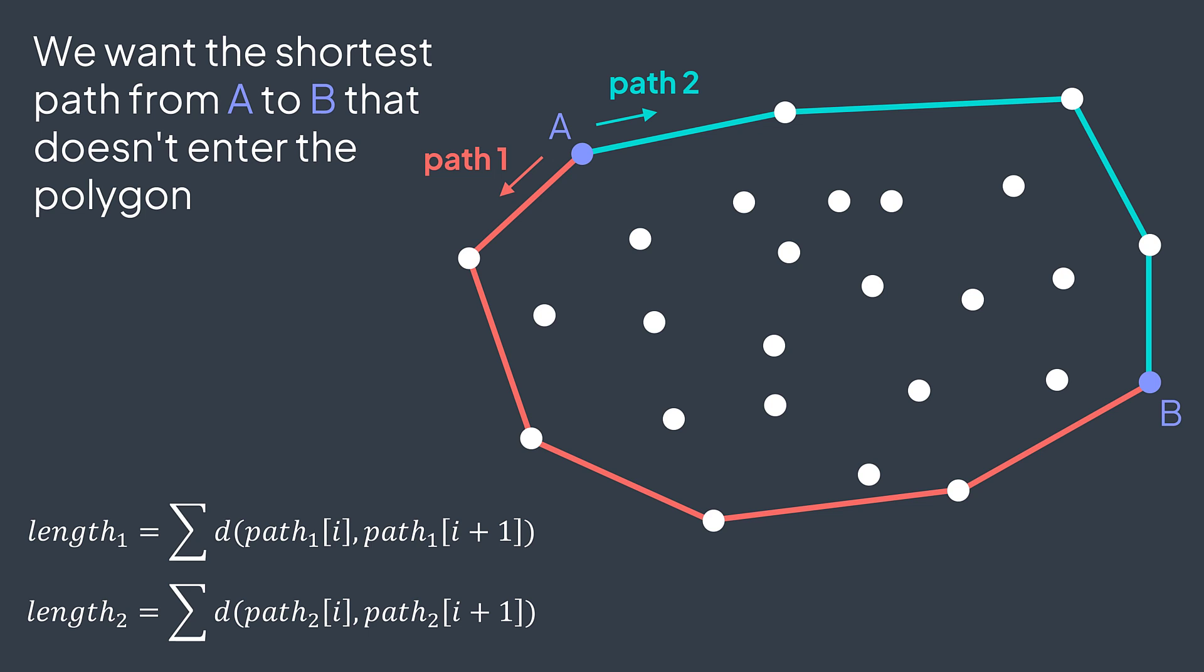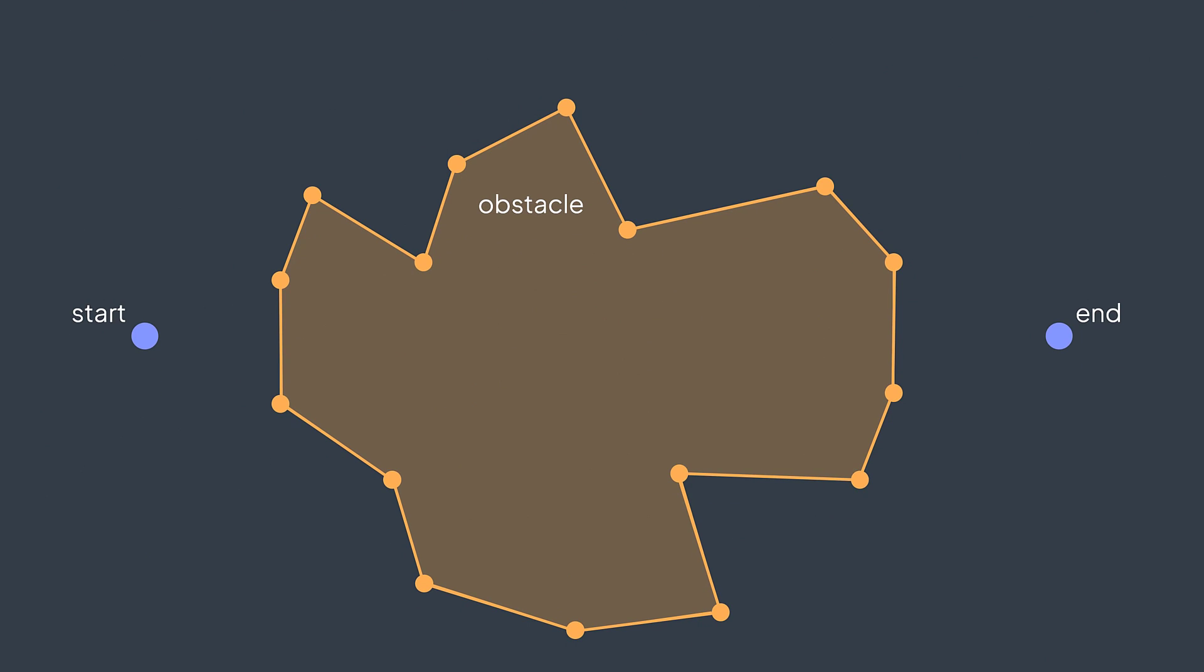And this is the strategy we will use for our initial problem. We have two points start and end and a set of points that represents the obstacle. What we do is that we compute the convex hull of the set of all the points, including start and end.